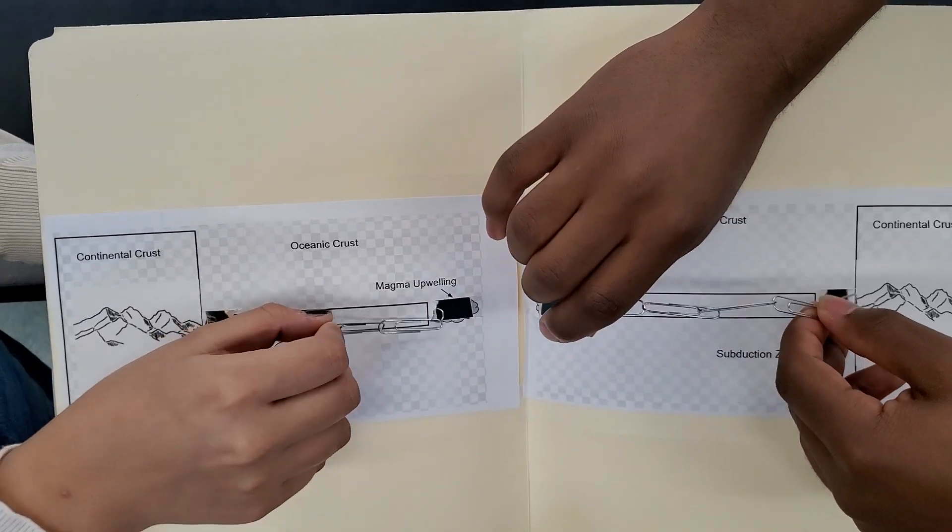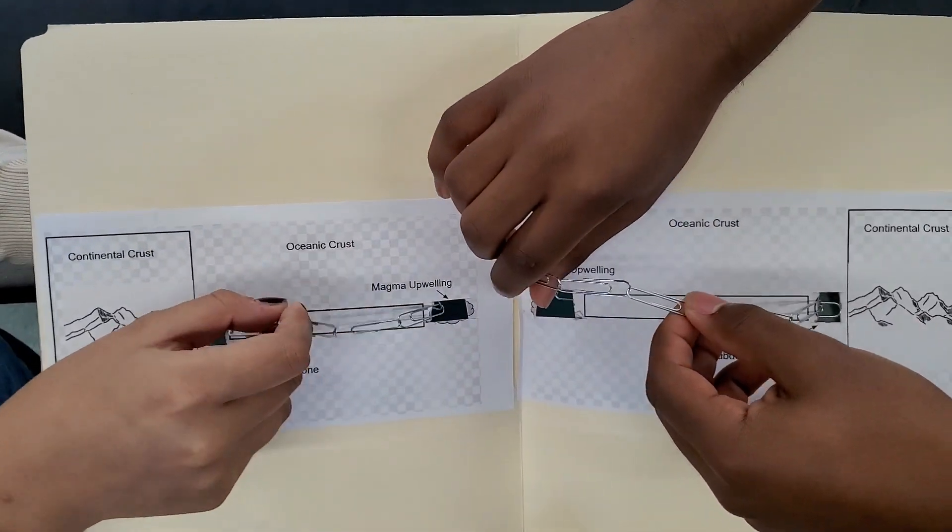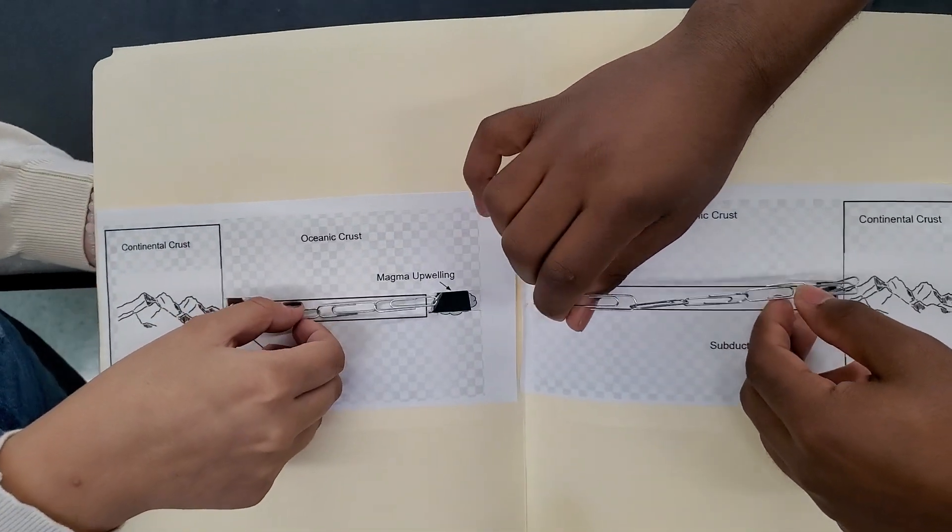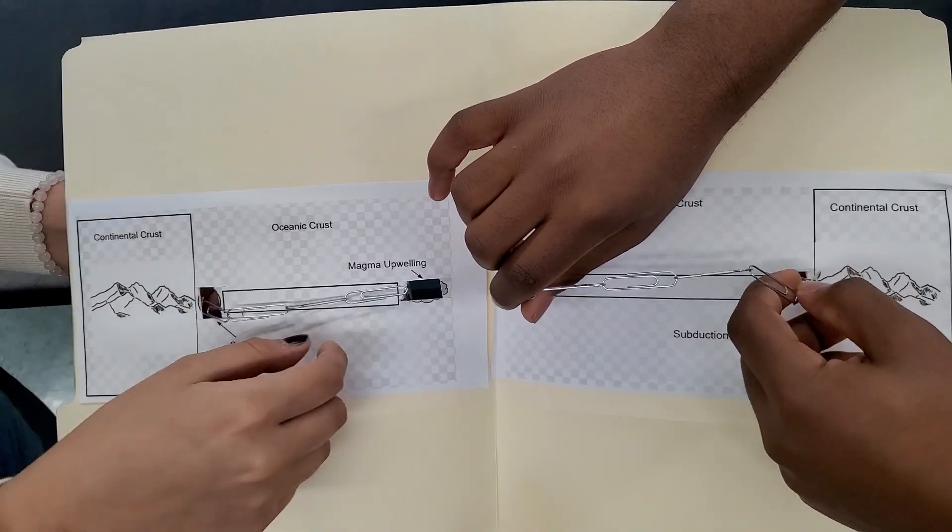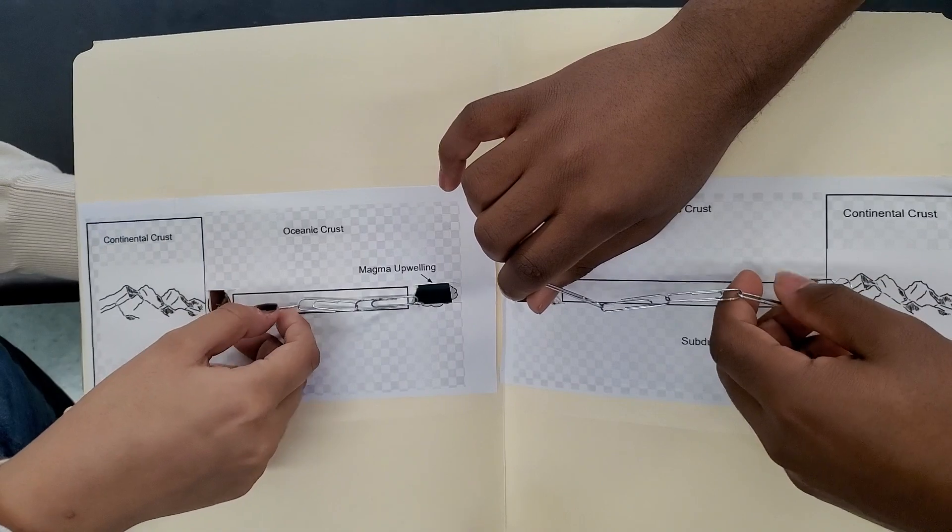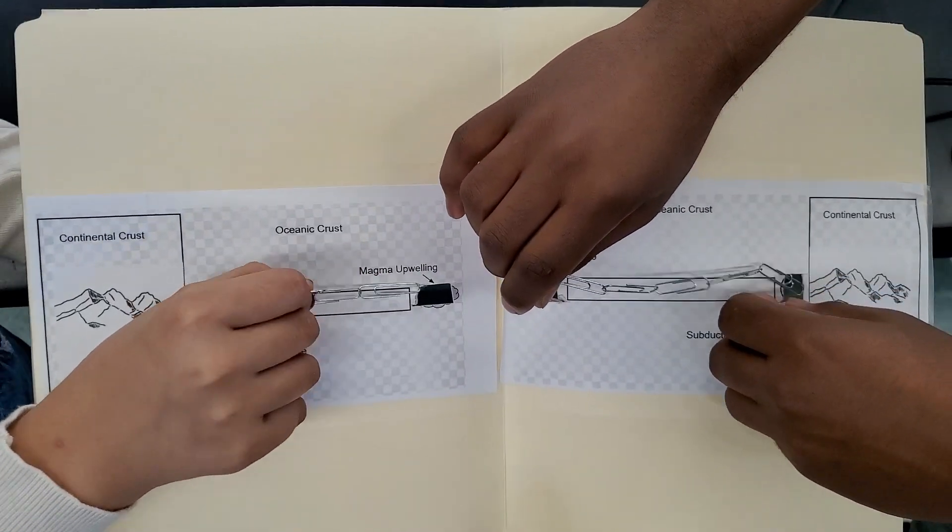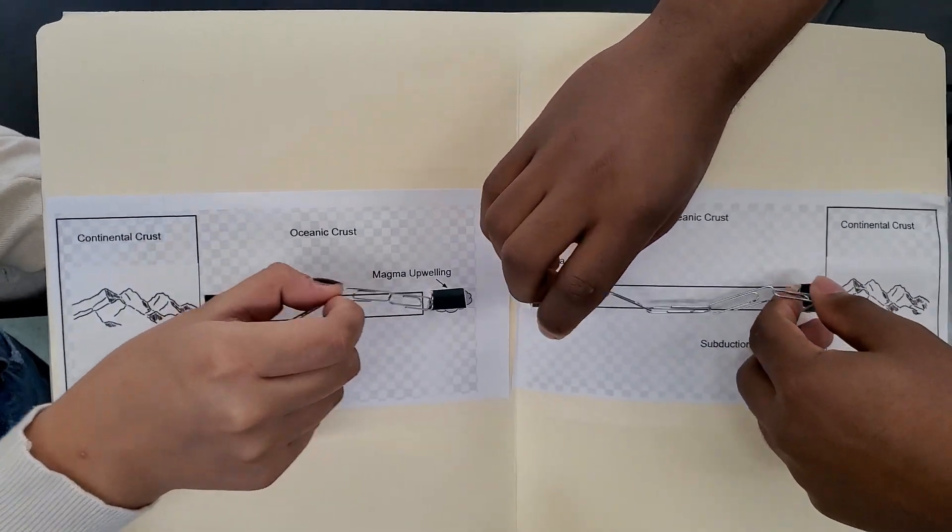What was your name again? Jocelyn. Jocelyn, I just blanked out. Jocelyn, why would the plates go underneath the continental crust and into the subduction zone? Because of cold temperatures. All right, and cold temperatures make things... Heavier. Heavier and sink.